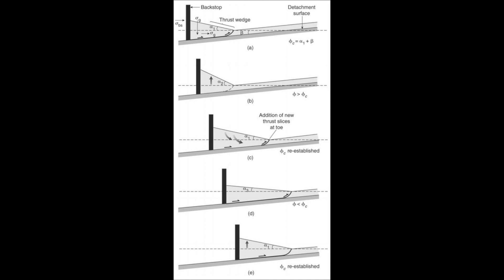When the wedge reaches a certain critical taper angle, the wedge as a whole slides toward the foreland along the weak detachment, as shown in figure A. Slip occurs on the detachment because the coefficient of sliding friction on the detachment is less than the coefficient of internal friction in the wedge.